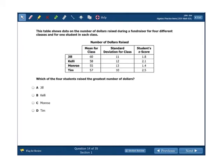Onward. This table shows the data on the number of dollars raised during a fundraiser for four different classes and for one student in each class. Let's take a look at the data. I'm going to use a nice blue arrow. So Jill, Kelly, Monroe, and Tim. The mean for the class is given. The standard deviation for the class is given. And the student's Z-score is given. And it says, which of the four students raised the greatest number of dollars? Well, this is a much more difficult question. It is involving Z-score, but it's involving Z-score in a manner that we are not used to.